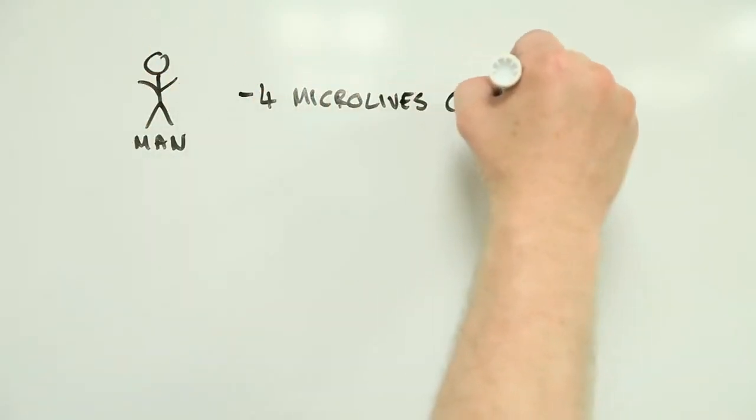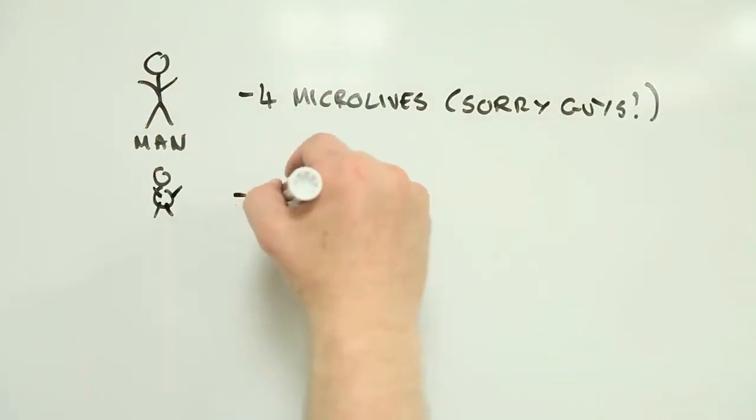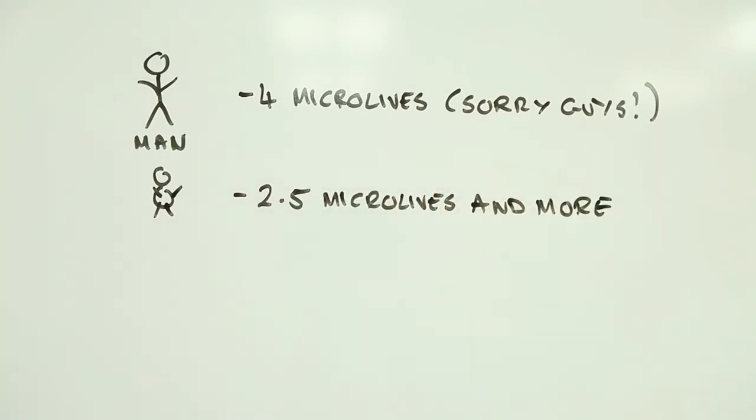Most things we do can be expressed as Microlives. Being a man rather than a woman will cost you 4 Microlives. Being considerably overweight could cost you upwards of 2.5 Microlives.